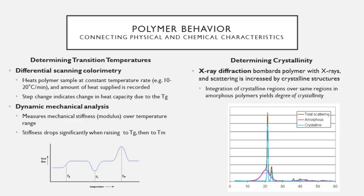In DSC, a polymer sample is heated or cooled at a constant rate and the amount of heat supplied or removed is recorded. The step change in temperature versus heat supplied indicates when transition points have occurred. As shown in the graph, heat supplied is on the y-axis and temperature on the x-axis, and we can see various plateaus or step changes indicating each temperature transition.